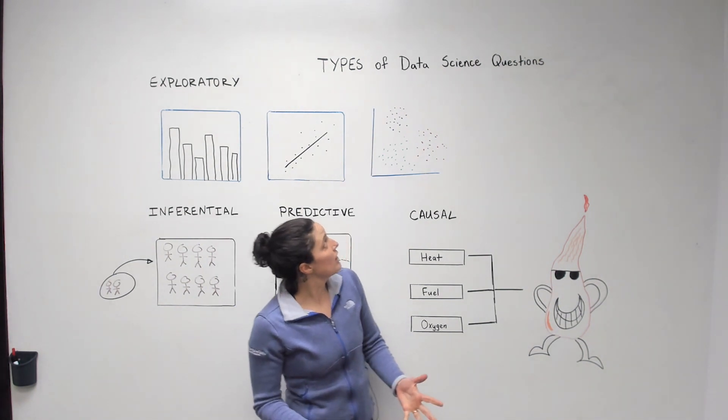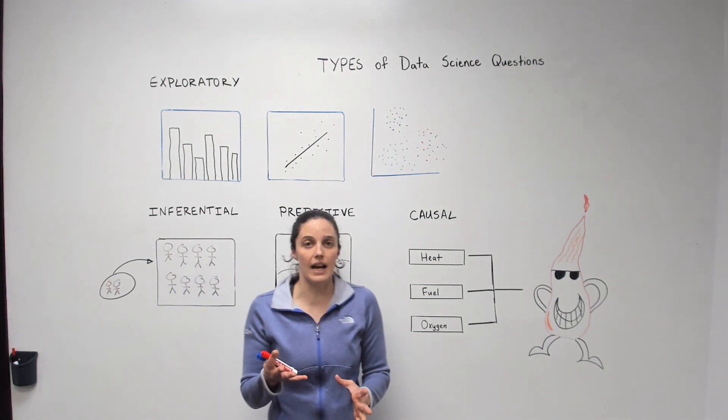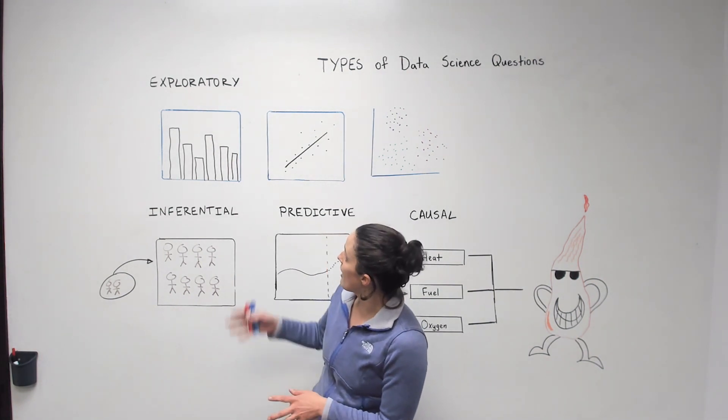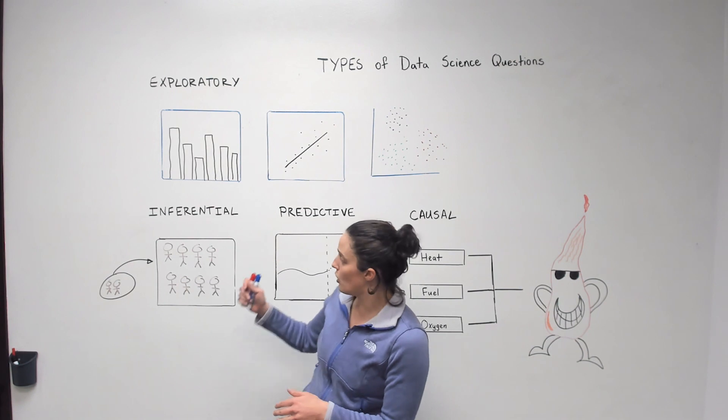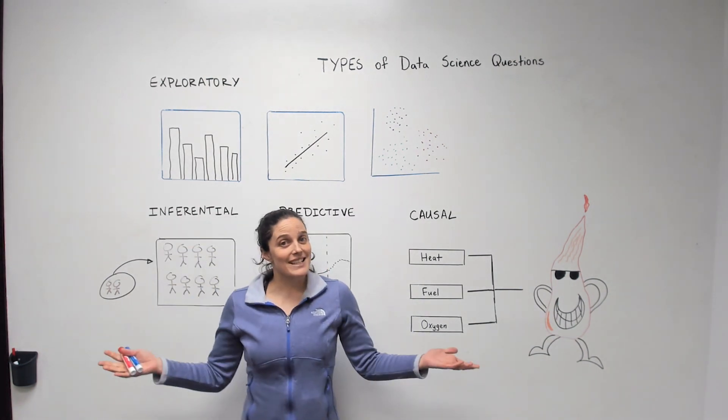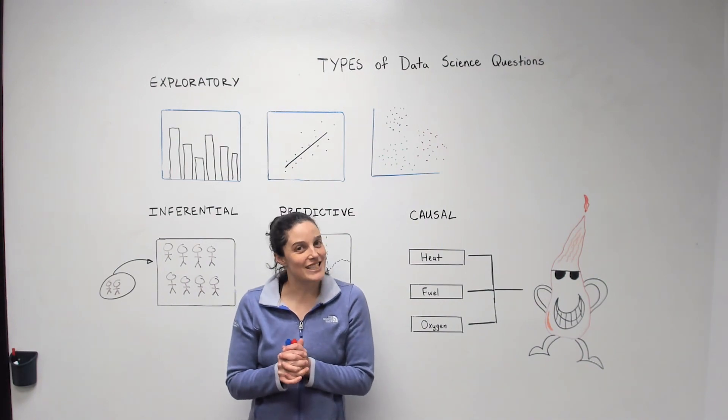So that's generally a good mix of what kind of data science questions we generally tackle. As a data scientist we have exploratory, inferential, predictive, and causal. That's Data Science Wednesday and we really appreciate you watching. Have a good day.